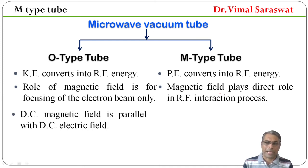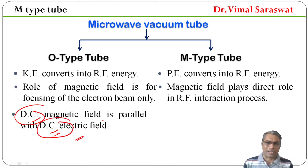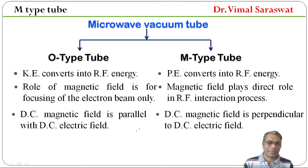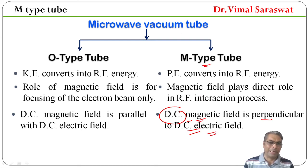In O-Type tube, DC magnetic field is parallel to DC electric field. यहाँ पर DC magnetic field, DC electric field के parallel होता है. Whereas, in M-Type tube, DC magnetic field is perpendicular to DC electric field. M-Type tube में DC magnetic field, DC electric field के perpendicular है.